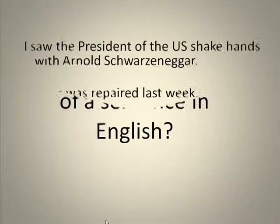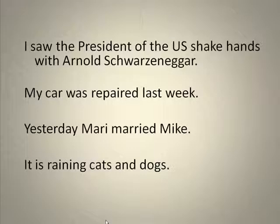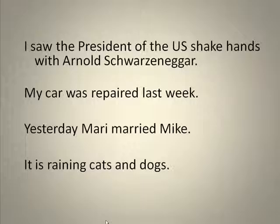For example, 'I saw the President of the U.S. shake hands with Arnold Schwarzenegger.' Very often we say that the subject of a sentence is what the sentence is about, but in this first sentence, the sentence seems to be more about the President of the U.S. shaking hands with Arnold Schwarzenegger than it does about 'I' — and 'I' actually is the subject of the sentence.